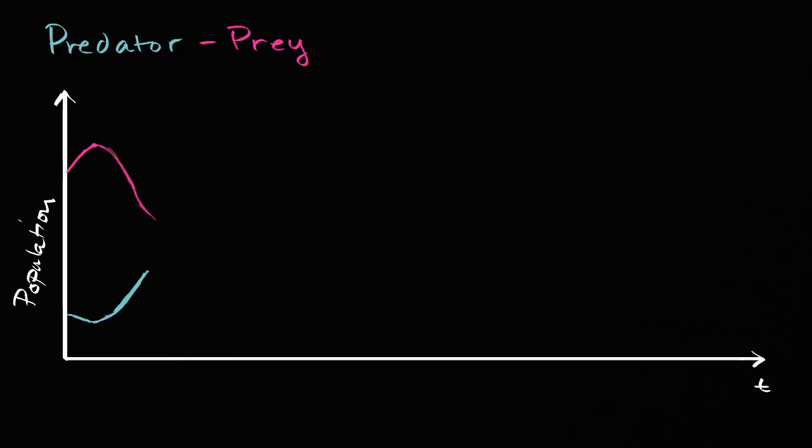All the way to a point where if the population of the prey gets low enough, the predators are going to start having trouble finding food again, and so their population might start to decrease. And as their population decreases, what's going to happen to the prey? Well, then there's going to be less predators around, so their population might start to increase.